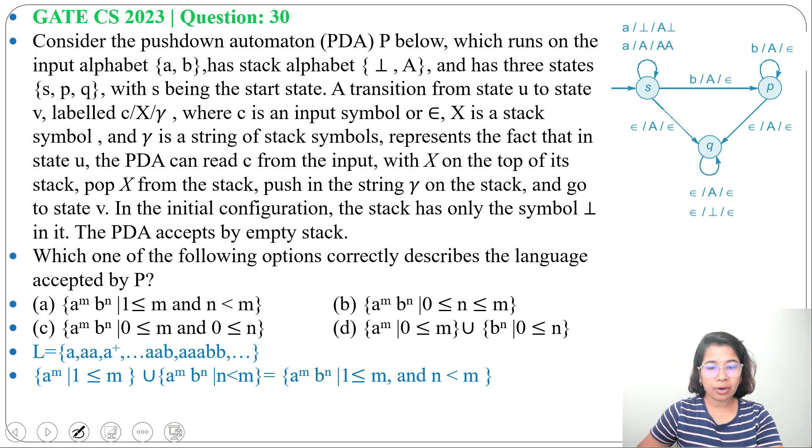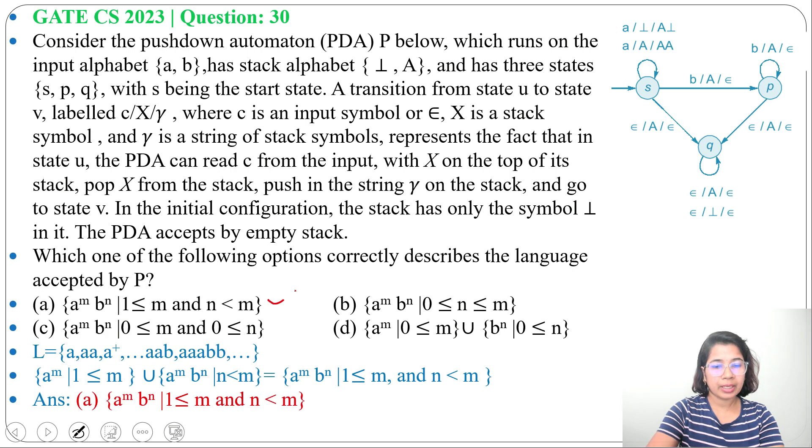Now check in which option this language is present. It's present in option A. So answer will be option A: A power M B power N where M value should be greater than or equal to 1 and M value is greater than N.